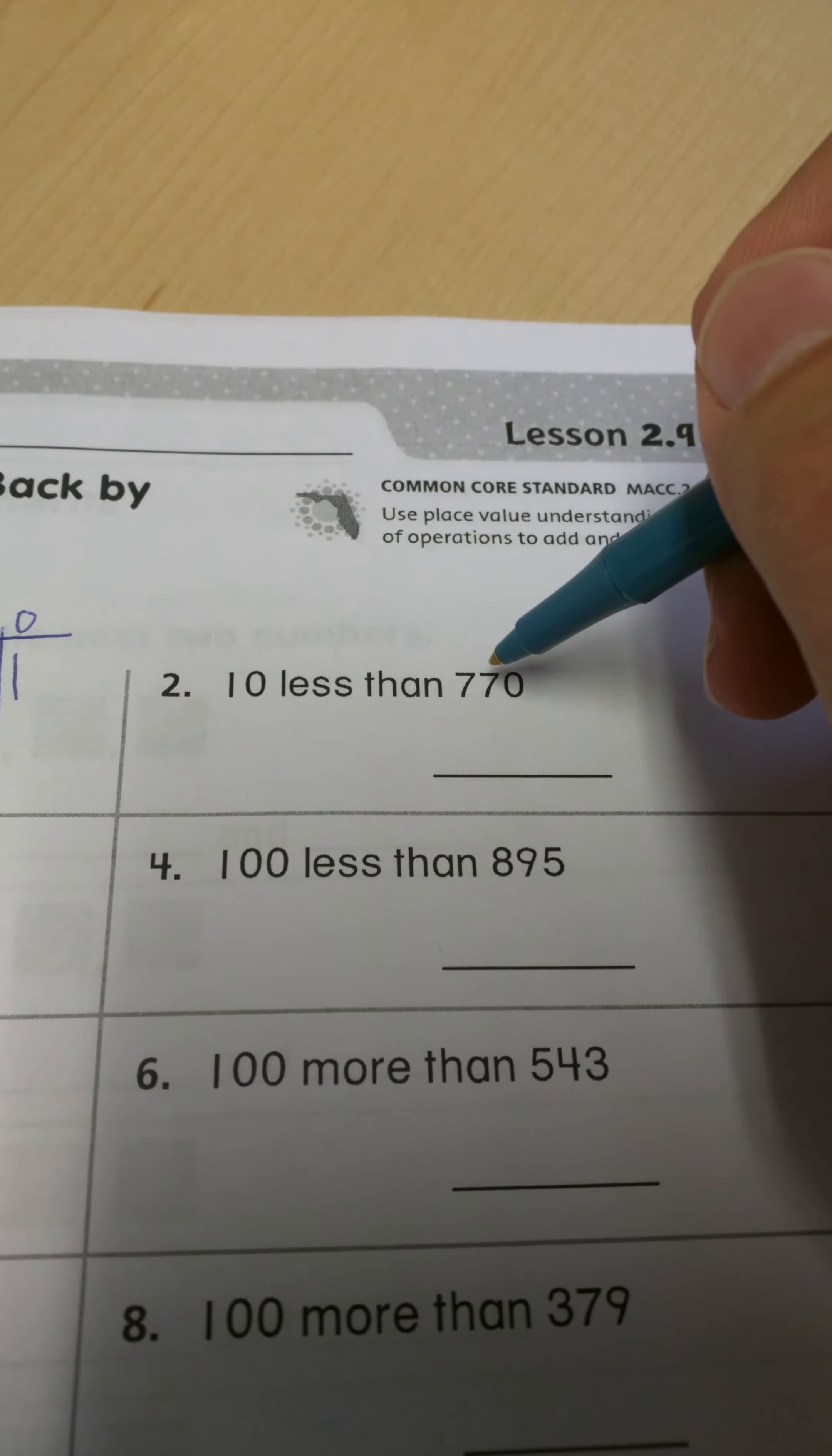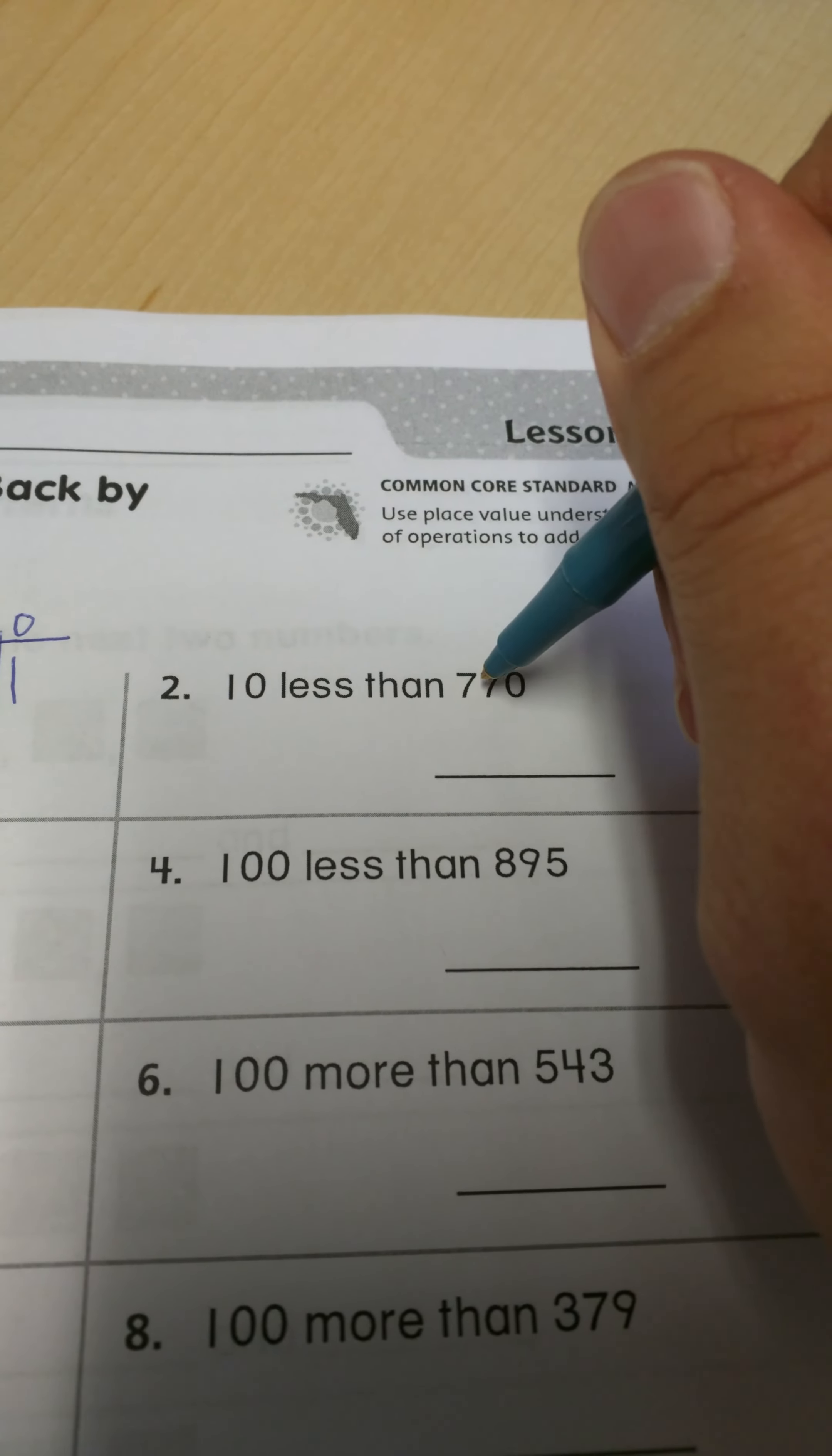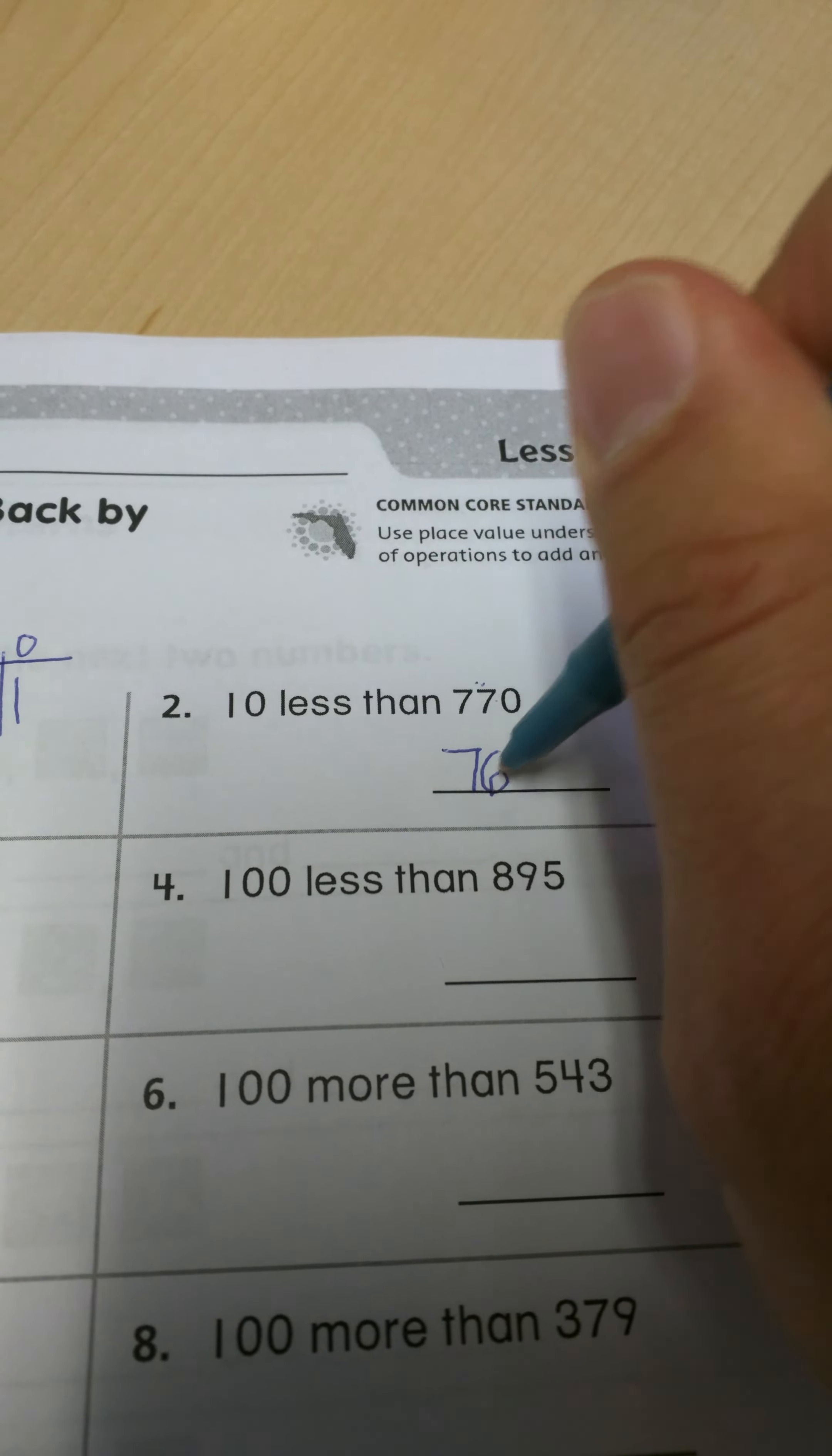Now that we understand that concept, this shows 10 less than 770. Again, my tens are right here in the middle. It says 10 less, so I'm just going to take one away from the 7. So 770 now becomes 760.